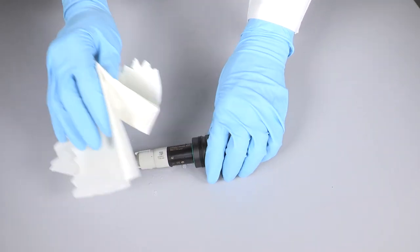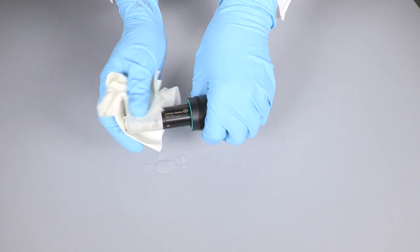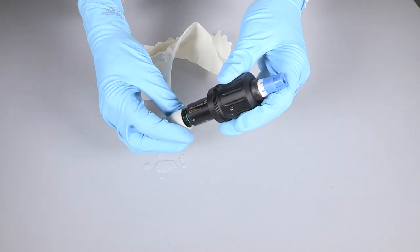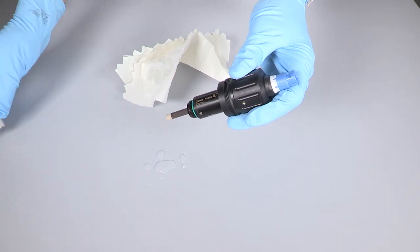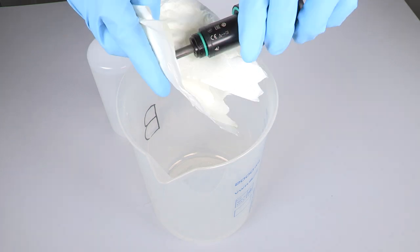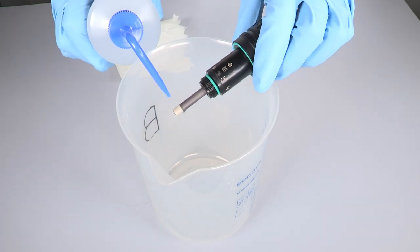Clean and dry the sensor and disassemble the membrane cap. Drain the old electrolyte and dispose the old membrane cap. Clean the gold electrode with a soft sponge and flush the electrode body with demineralized water.